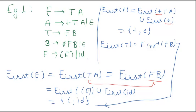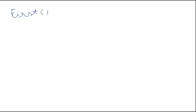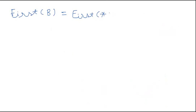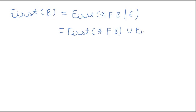Now it's remaining to calculate First(B), so we will calculate First(B) on a new page. First(B) is equal to First(*FB | epsilon), which is equal to First(*FB) union First(epsilon). This gives us {*, epsilon}.